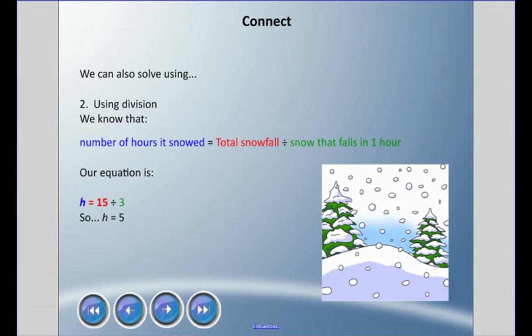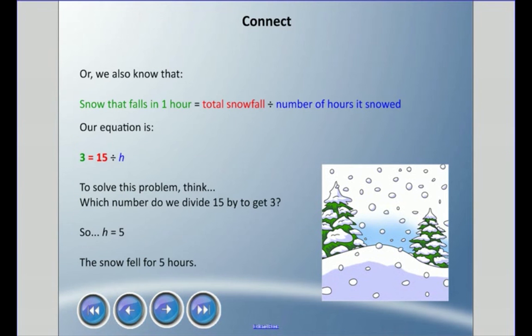Now we can also solve this using division. We can use the number of hours it snowed equals the total snowfall divided by snow that falls in one hour. We know that the total snowfall is 15, we know the amount that fell in that one hour, which was 3 centimeters. So H equals 15 divided by 3. Again, 15 divided by 3, H equals 5.